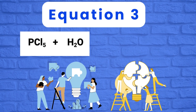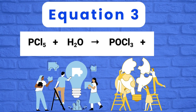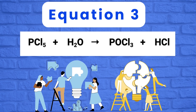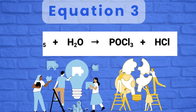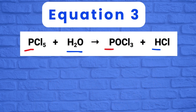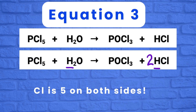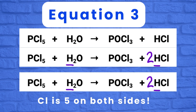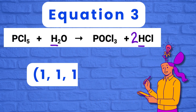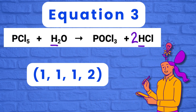Equation 3: PCl5 plus H2O gives POCl3 plus HCl. Phosphorus on both sides is already balanced. So we balance hydrogen by putting a coefficient of 2 in front of HCl, making hydrogen 2 on both sides. Oxygen is already balanced as well. The equation is balanced; coefficients are 1, 1, 1, 2.